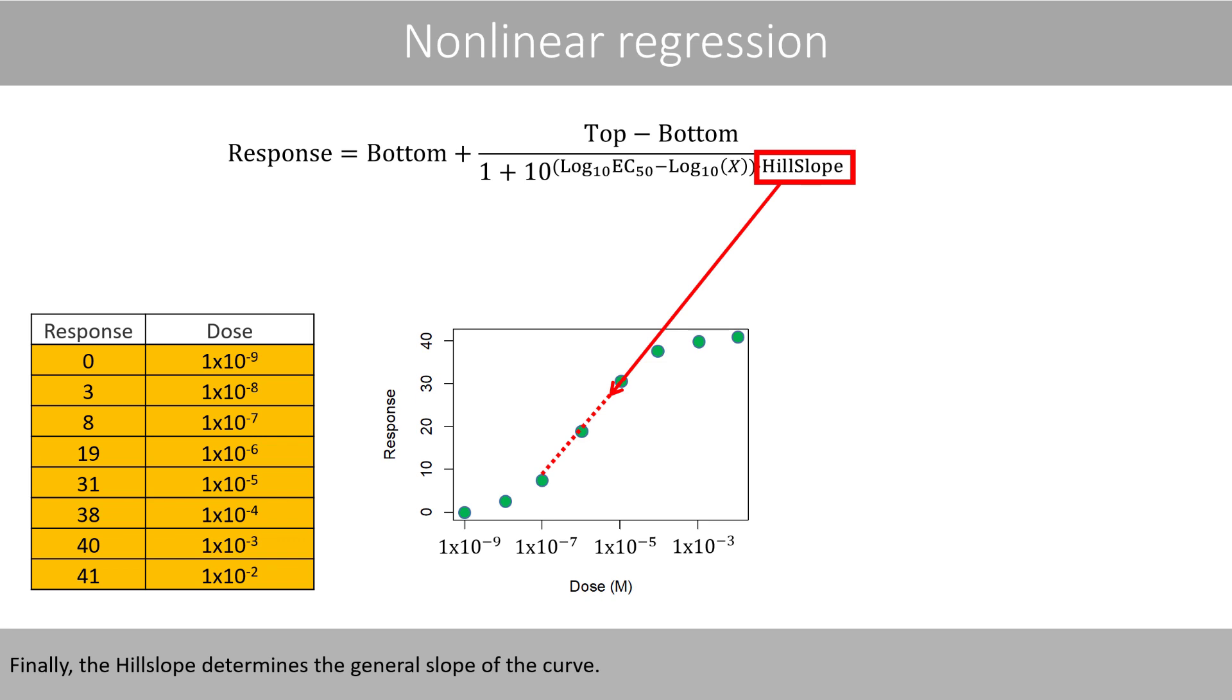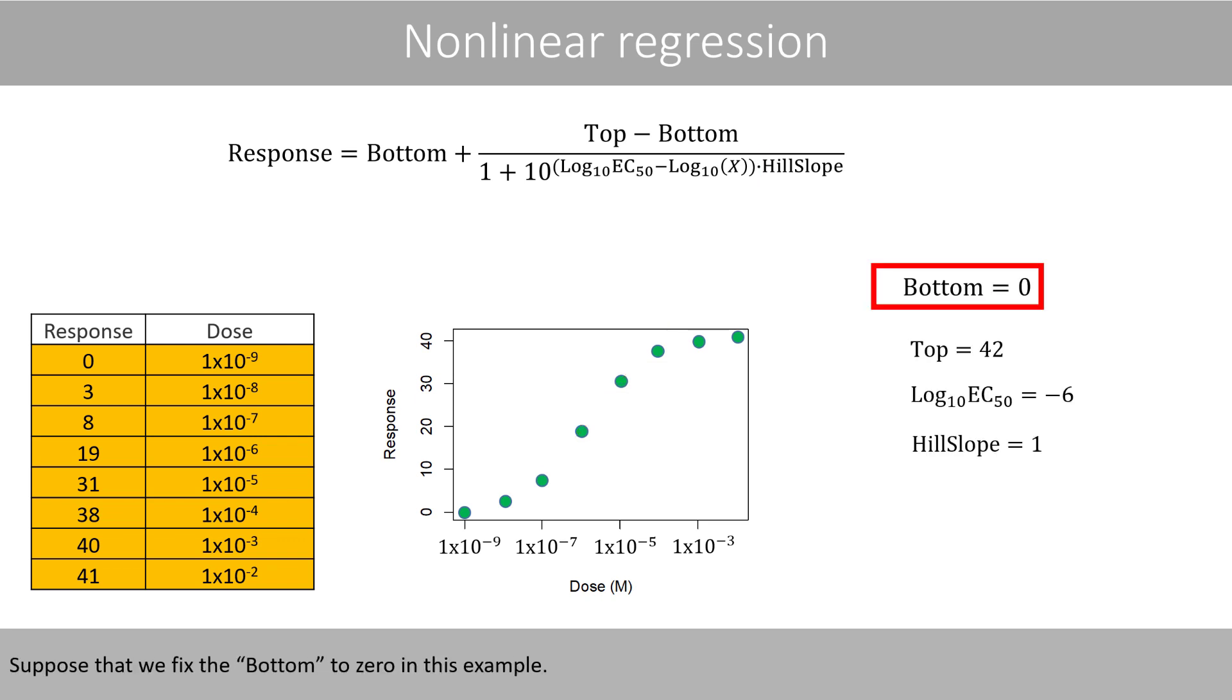Finally, the hill slope determines the general slope of the curve. Suppose that we fix the bottom to zero in this example. Our initial guess of the top could be set to 42, and log10 EC50 to negative 6, whereas an appropriate initial guess of the hill slope is usually 1 if the slope is positive.